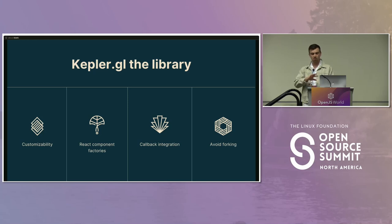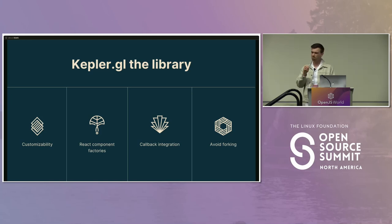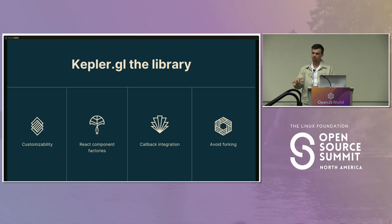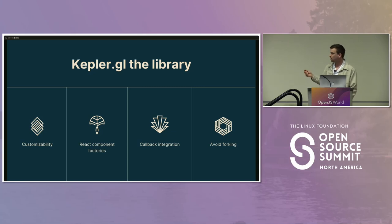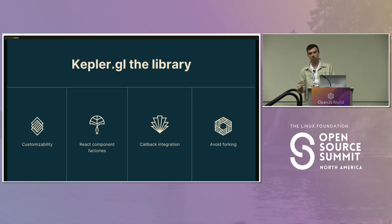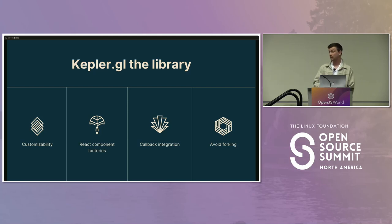Many companies in the mobility space are using KeplerGL for geospatial analysis. It's really easy to get started — it's free, there's no sign-up required, you can just go to the website and start messing around. It's also been used as a geospatial user interface library by companies such as Foursquare and Carto, who use it to build their own customized applications. We've added React component factories that can inject custom components into the UI and a system of callbacks to integrate the state changes of the KeplerGL component with the rest of your application.